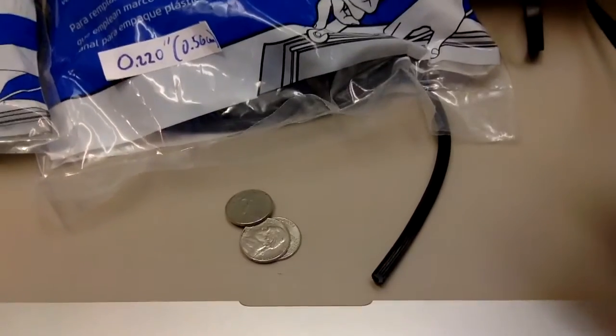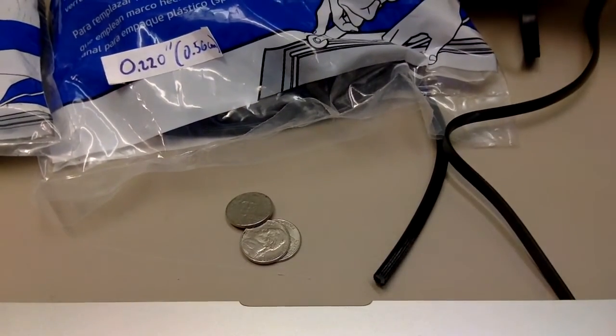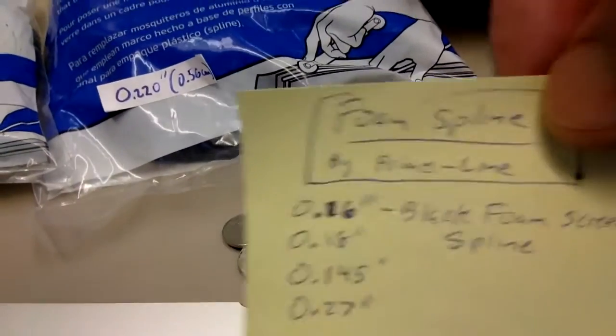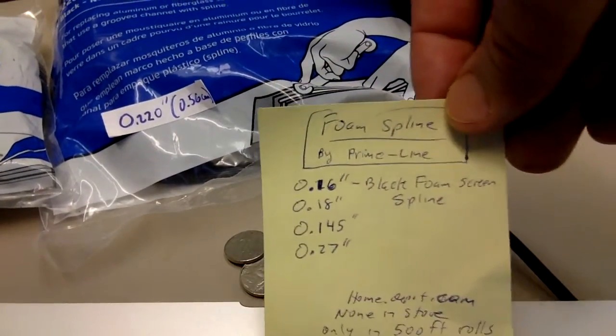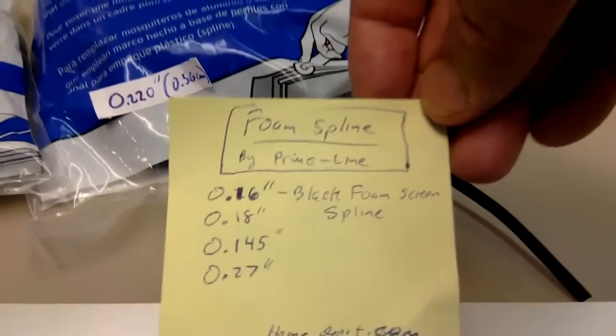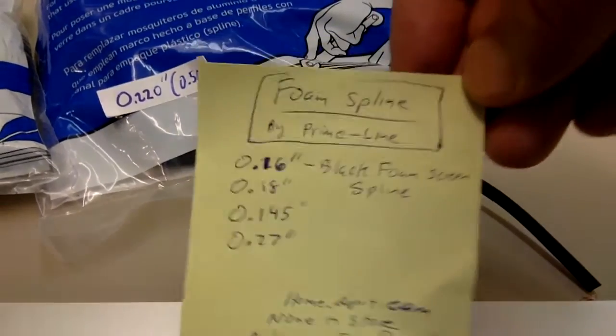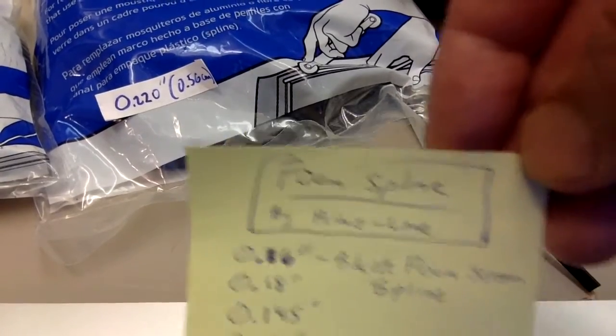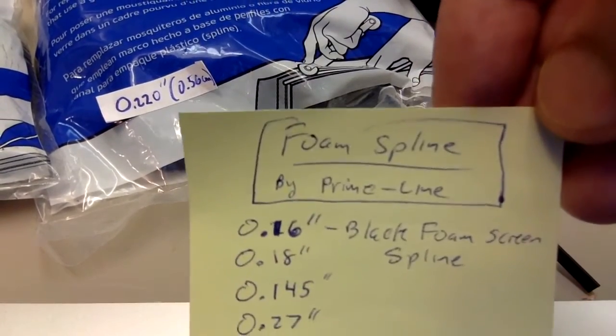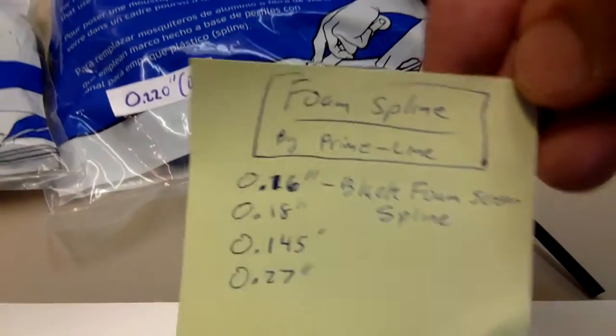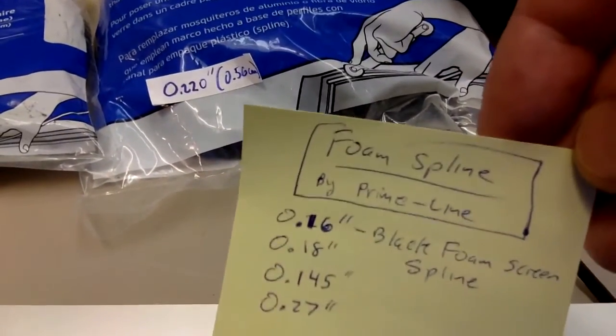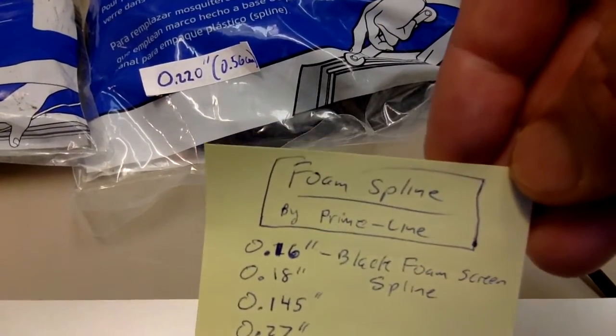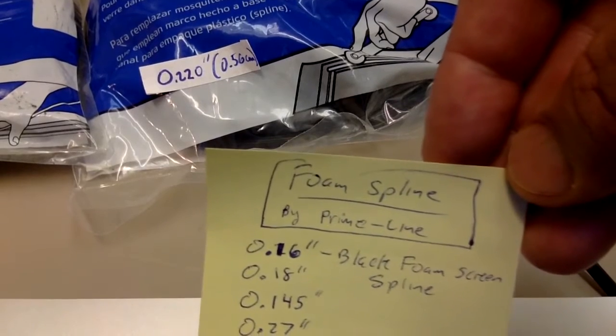The foam spline you can buy at Home Depot but you have to buy it in 500 foot rolls and it's very expensive. Some YouTube people and other people on the internet use it - it's a lot easier to put in than the vinyl, it collapses easier, spreads out easier. I don't know if it lasts as long though.